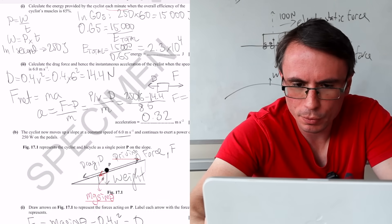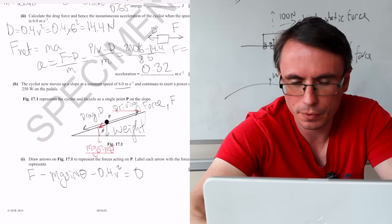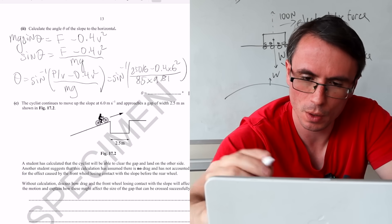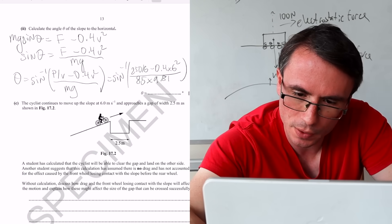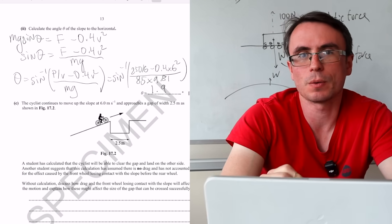Now, how many significant figures should we use? Well, all of these are given up to two significant figures. So I'm going to say that theta is 1.9 degrees.